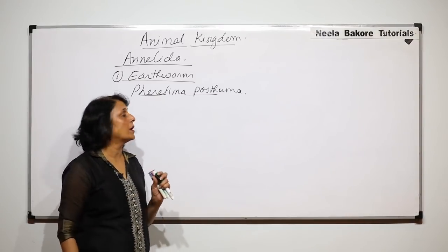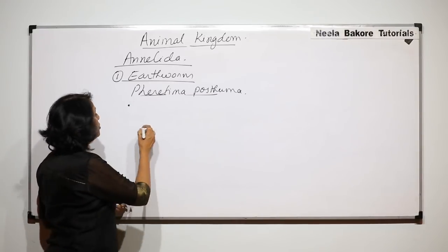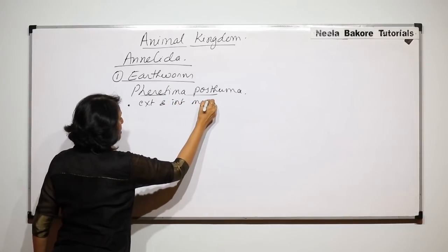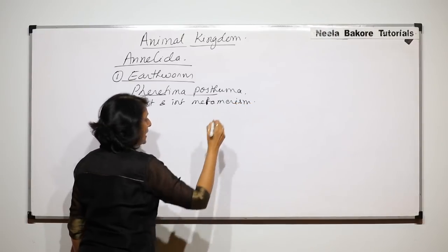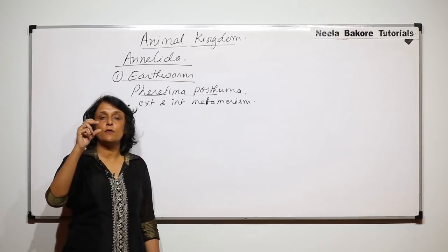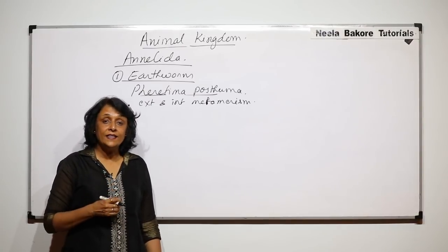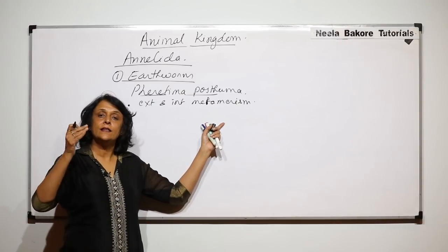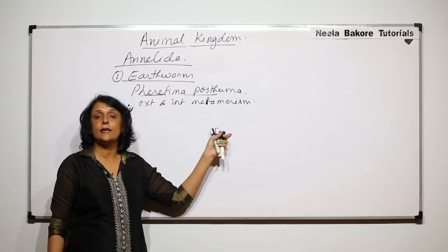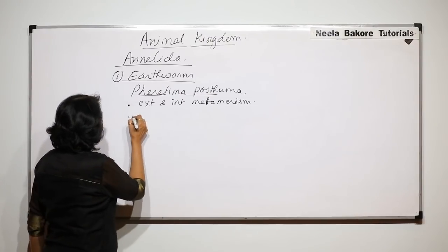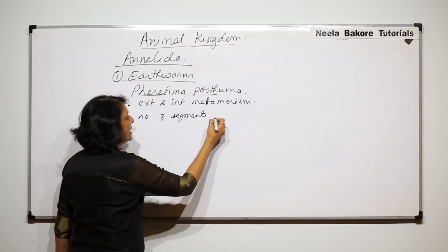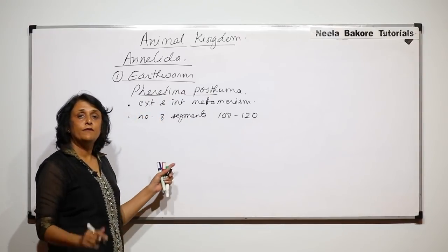Pheretima, or the earthworm, shows both internal as well as external metamerism. Metameric segmentation means there is segmentation in the body. Externally, it is visible in the form of segments called annuli. If it is internally metamerically segmented, then internally the structures repeat from segment to segment. In the case of the earthworm, both internal and external metamerism are seen.